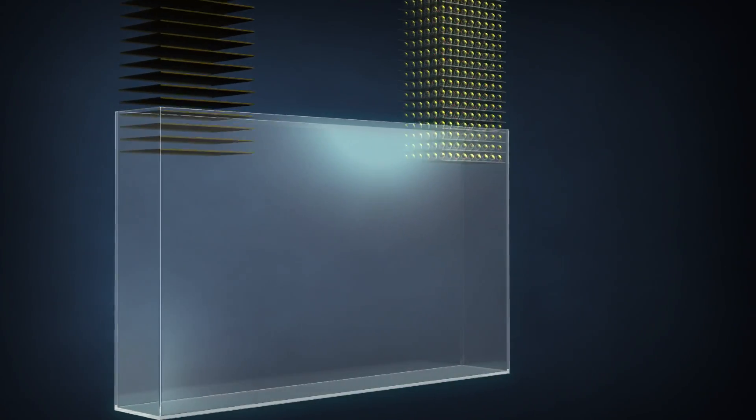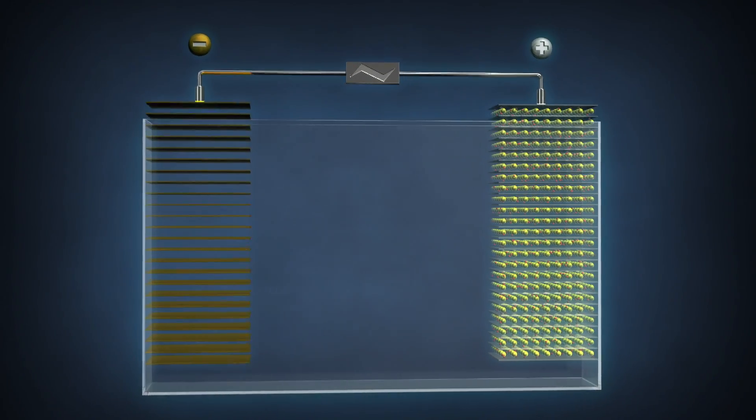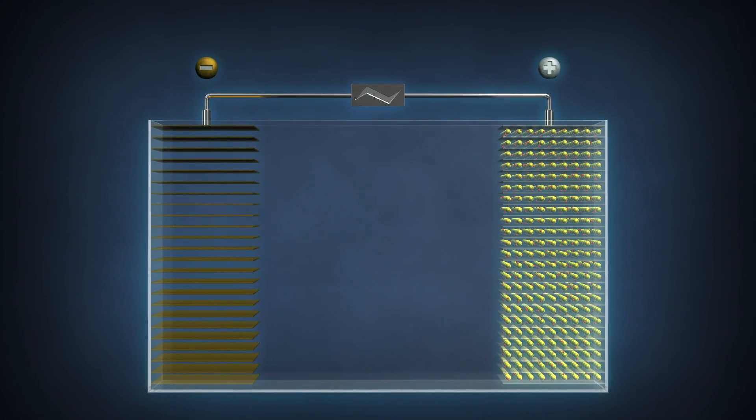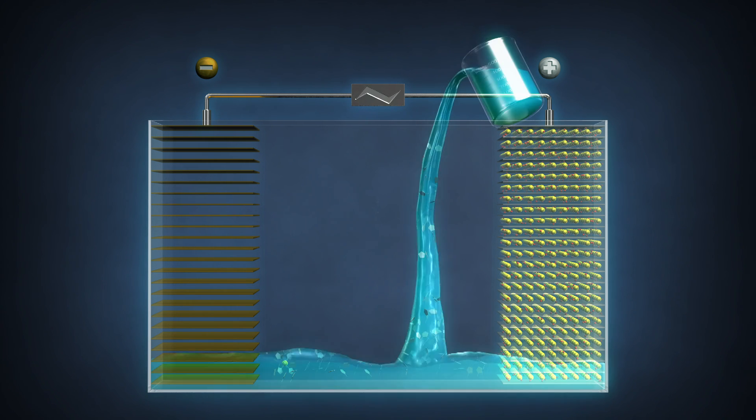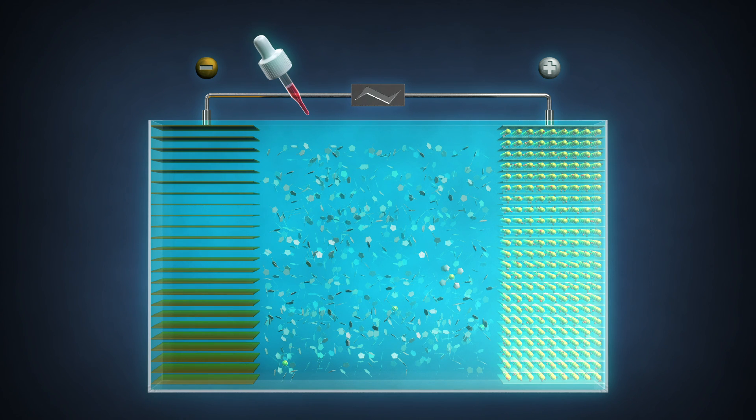The key to developing better batteries is the development and combination of materials. The electrode. The electrolyte. Additives to increase the performance of the battery.